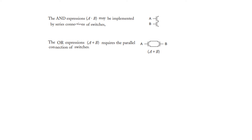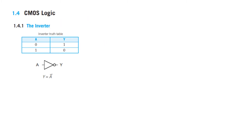Now let's understand inverter logic. The truth table of an inverter: when input is 0 the output is 1, and when input is 1 the output is 0. This is the symbol for an inverter and the Boolean expression: Y equals A complement.